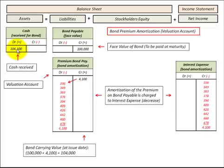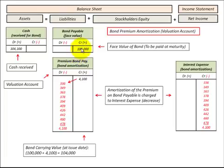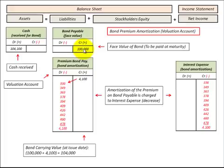The reduction in interest expense was included as part of this $4,100 premium — since we only have to pay $100,000 at maturity, we actually reduced our interest expense. In overview, this valuation account takes the bonds payable liability and brings it down to $100,000 at maturity by amortizing the premium against interest expense, reducing interest expense, and bringing the bonds payable face value at maturity to $100,000. That's how the valuation account works to adjust one account by using a valuation account.